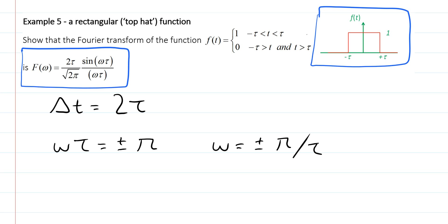The width is defined between these two solutions. So we say that the width of the Fourier transform, delta omega, is equal to 2 pi divided by tau. So we now have our two results.